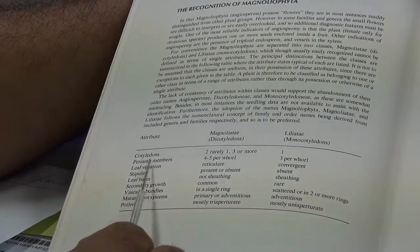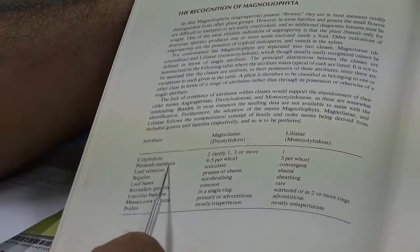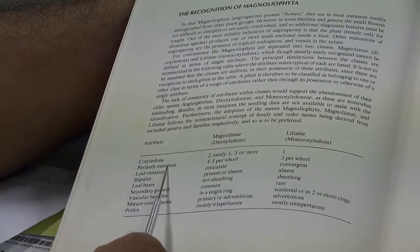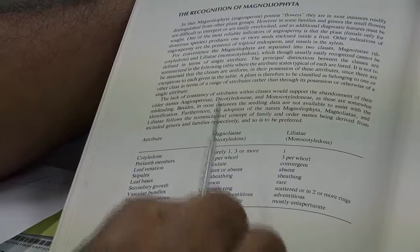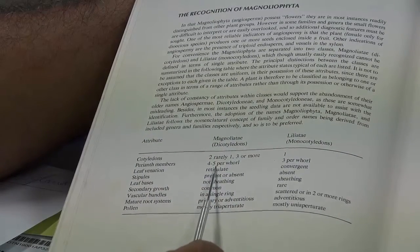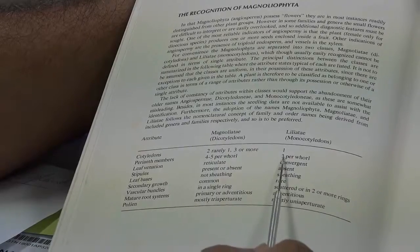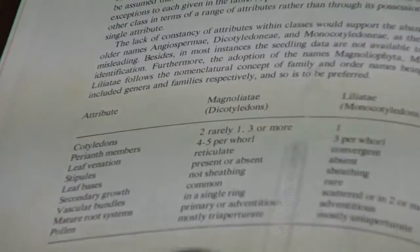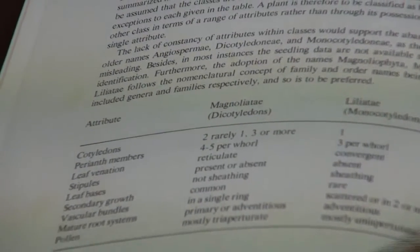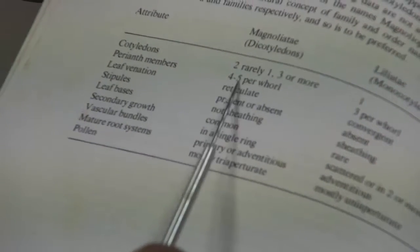Amongst them is the perianth members — that is, the number of sepals or petals is one very important feature. In dicots, we have four to five per flower. In monocots, it starts with three, six, or nine. Whereas in dicots, it goes as four to five, then ten, fifteen, something like that. So in our case, we have five petals, so it's more likely that our sample belongs to dicot.